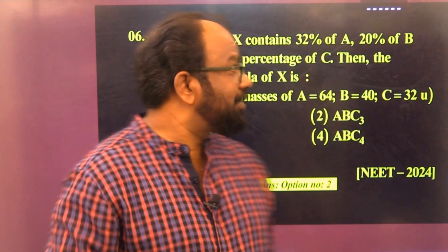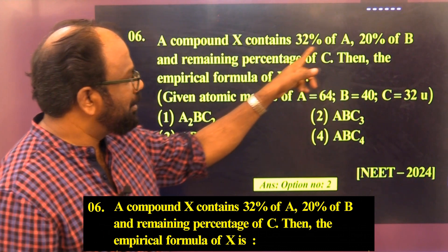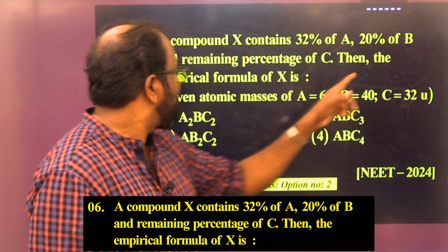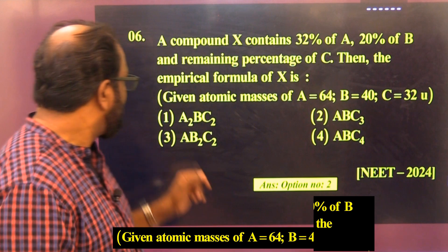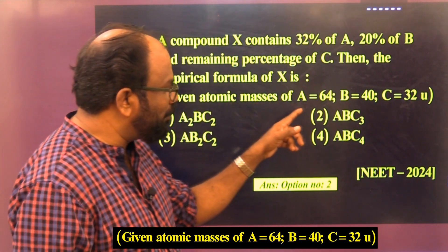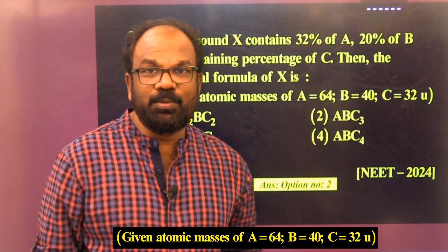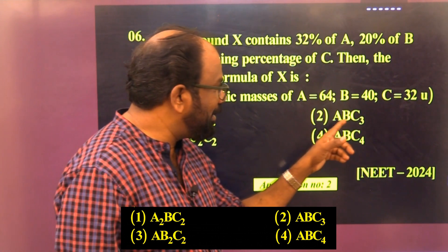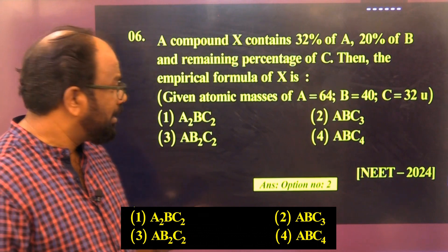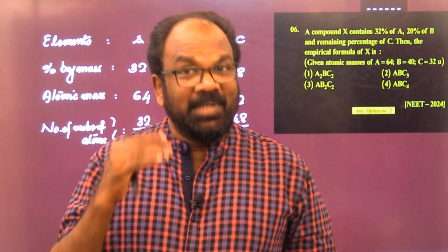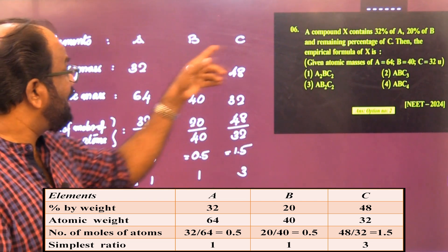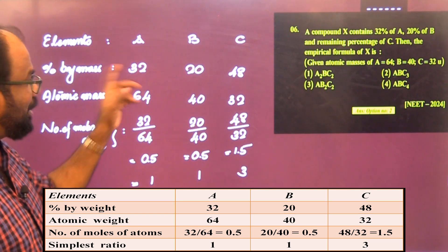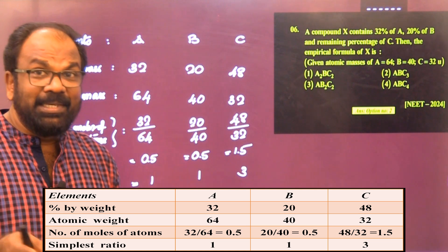Question 6: A compound X contains 32% of A, 20% of B, and the remaining percentage of C. The empirical formula of X is — given atomic mass of A = 64, B = 40, C = 32. Option 1: A₂BC₂, Option 2: ABC₃, Option 3: AB₂C₂, Option 4: ABC₄. The percentage of C = 100 − 32 − 20 = 48%.